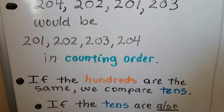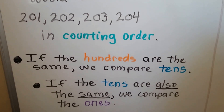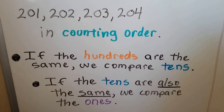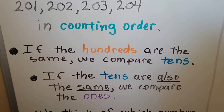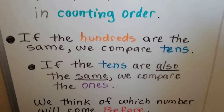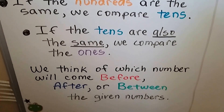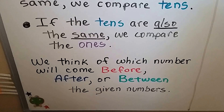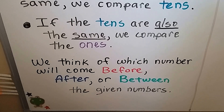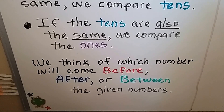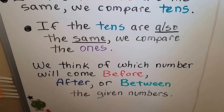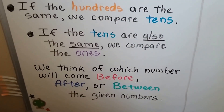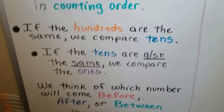If the hundreds are the same, we compare the tens and look at the tens. If the tens are also the same, we compare and look at the ones. We think of which number will come before, after, or between the given numbers — which one comes before, after, or between when we count?